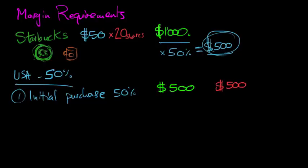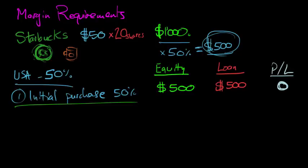And the profit and loss is $0. So this will be the loan, this will be the equity in the position. Alright, thereafter, there is a maintenance margin.